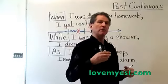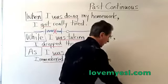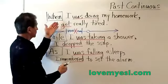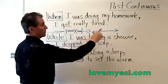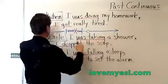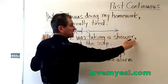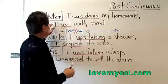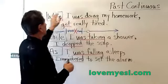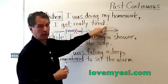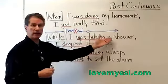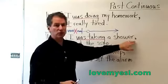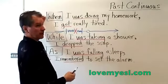Now there are some interesting cases where you use the past continuous, and it doesn't have anything to do with the words when, while, and as — which probably 80% of the time you're going to have. Notice that after all of these I used a comma when the introduction used the words when, while, and as — in other words, when you had the dependent clause first and the independent clause second, you need a comma. However, you can put the independent clause first: 'I got really tired when I was doing my homework' — no comma after 'tired.' You can also say, 'I dropped the soap while I was taking a shower' — no comma after 'soap.' If you have the independent clause first and the dependent clause second, there is no comma.